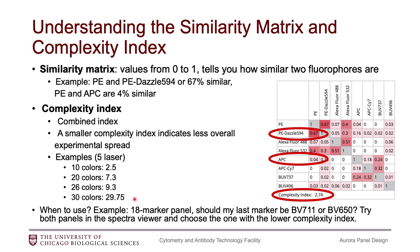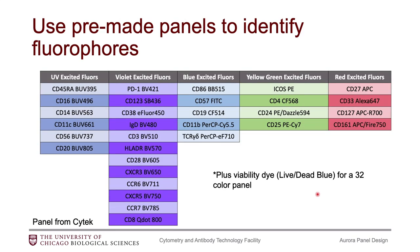An example of how you might choose to use this is when pairing fluorophores — if you have an 18-marker panel and your last marker you're trying to decide between BV711 and BV650 and you don't really have a preference, you could put them into this and determine which fluorophore gives you the lower complexity index. Another suggestion I have is to use pre-made panels. SciTech has a variety of different immunophenotyping panels of different sizes — I think they have a 24-marker panel, 32-color panel, and they've also published their 40-marker panel. These can be great starting places to just figure out which fluorophores to use. For a 32-color panel, I know that these 32 fluorophores work well together.